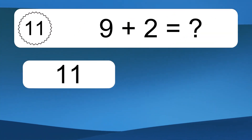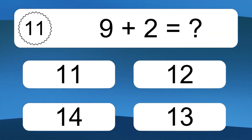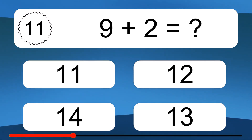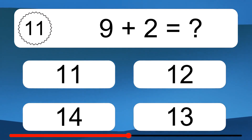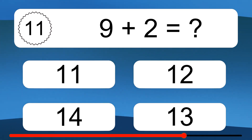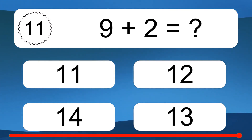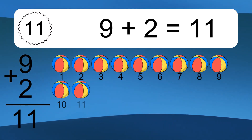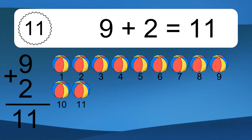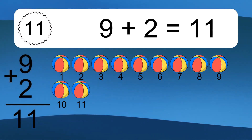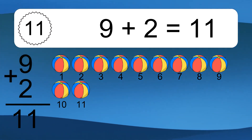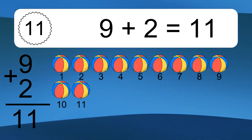9 plus 2 equals what? 9 plus 2 equals 11. Let's count it. 1, 2, 3, 4, 5, 6, 7, 8, 9, 10, 11.